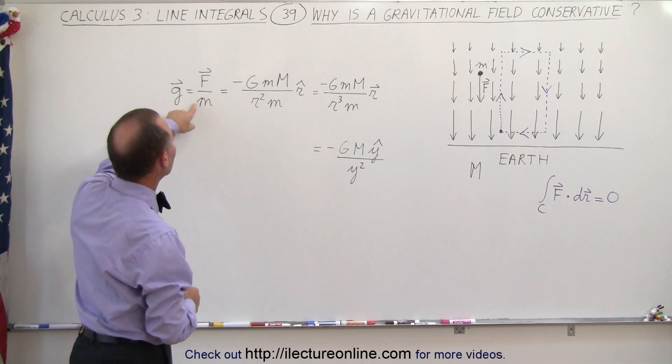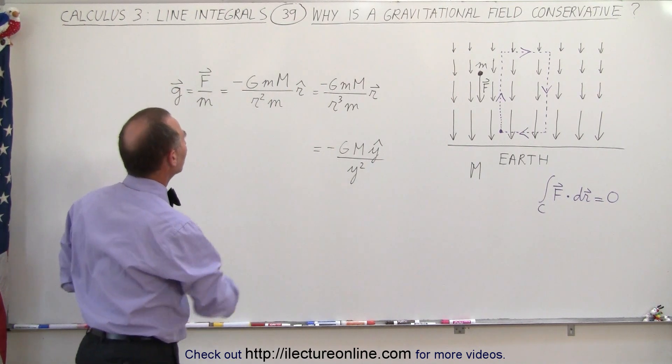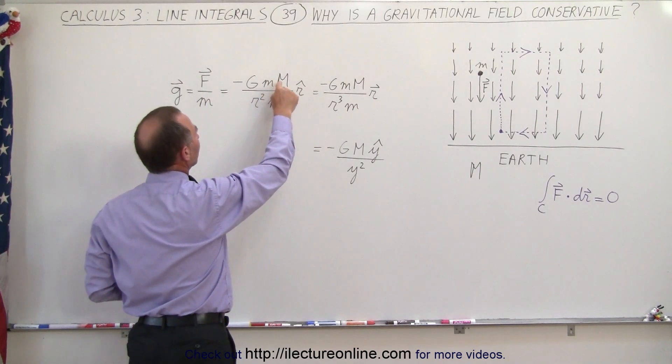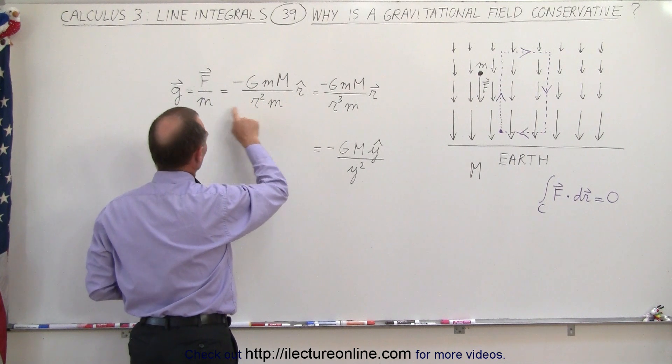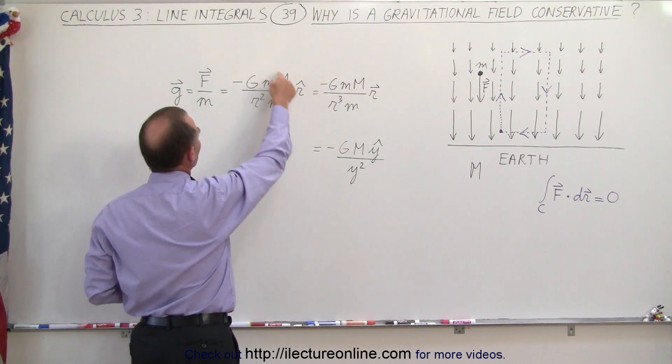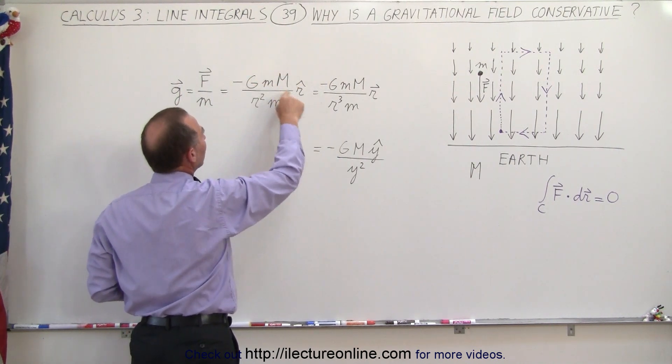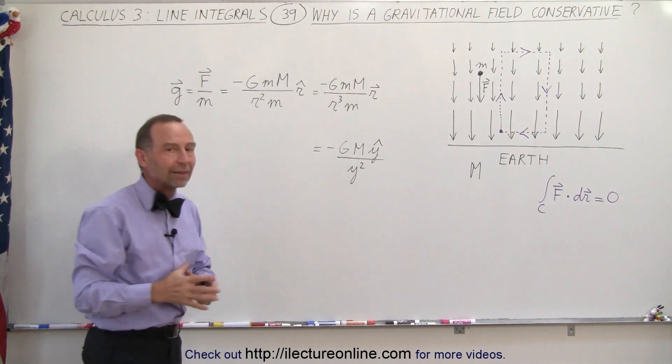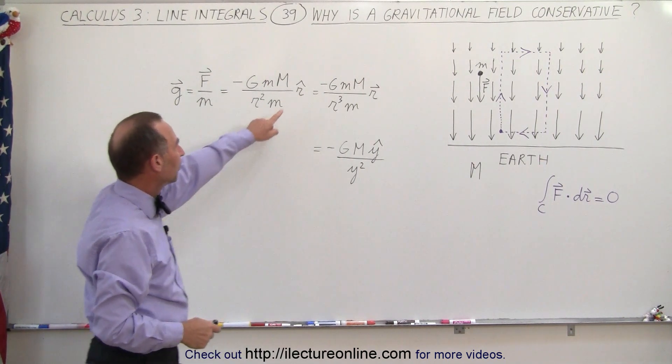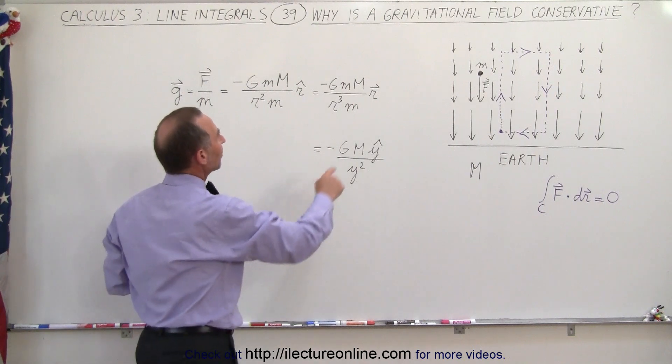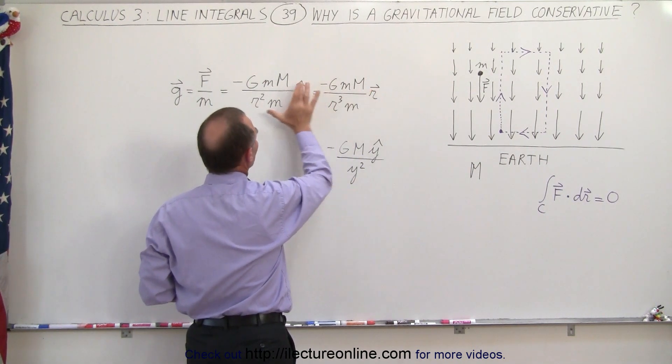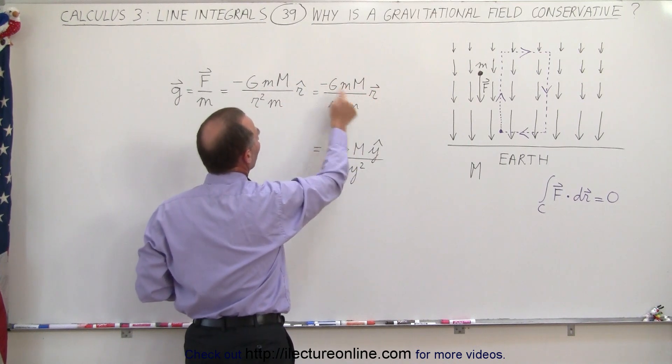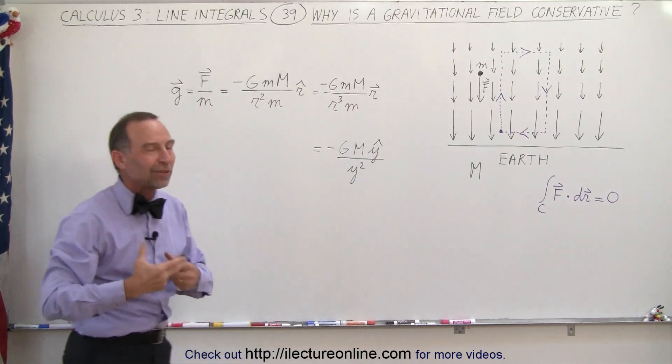The force due to gravity is equal to G, the mass of the object, the mass of the earth, divided by the distance between them squared. We divide that by the mass, and if we turn that into a vector quantity, we have to add the r component, the unit vector r component, or we can make this into a vector and divide by r cubed so that the ratio will be the same between the two. Those are really two different representations of the exact same thing.